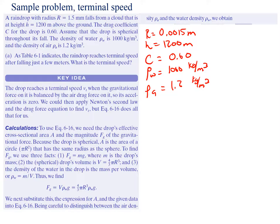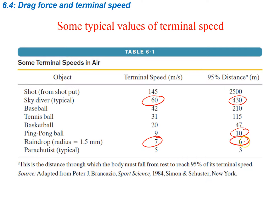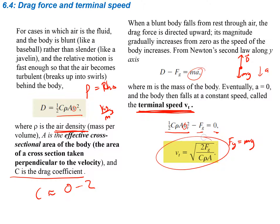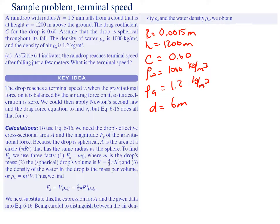As the previous table indicated, raindrops reach terminal speed after falling just a few meters — about 6 meters. The raindrop reaches terminal speed vt when the gravitational force acting downward is balanced by the air drag acting upward, so acceleration is zero. We apply Newton's second law and the drag equation to find vt. The terminal speed equation is vt = √(2Fg / CρA), which we derived earlier.